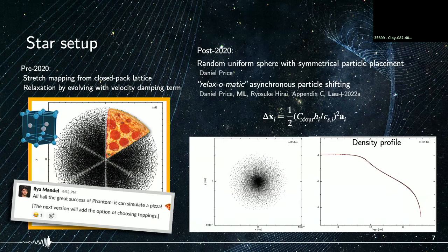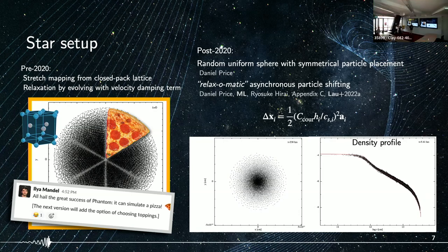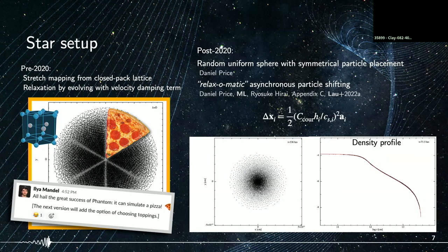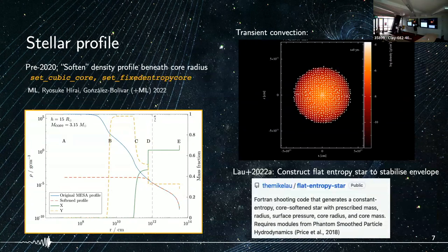We've also used a relaxation procedure that allows the entire profile to relax on its local dynamical timescale, so that outer particles with much longer dynamical times can also relax efficiently. Previously, with red giant stars having very dense cores, we simply chop off the core and replace it with a softened profile and a sink particle core in the middle.